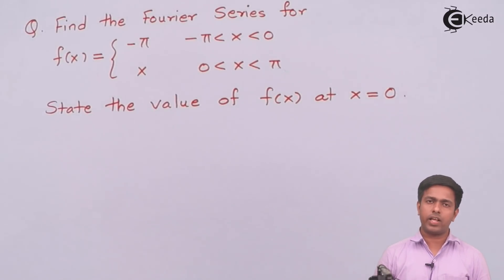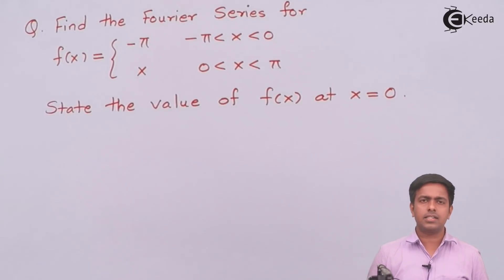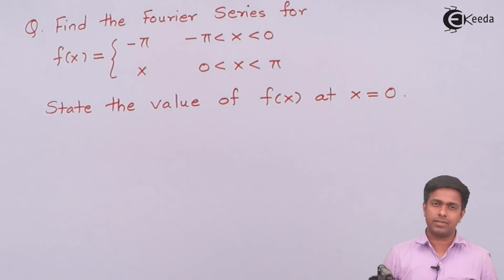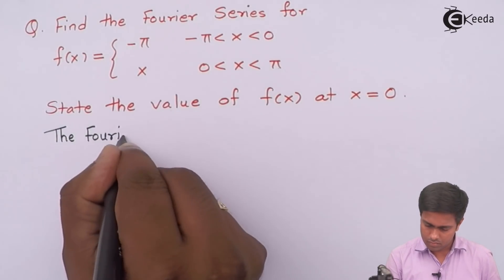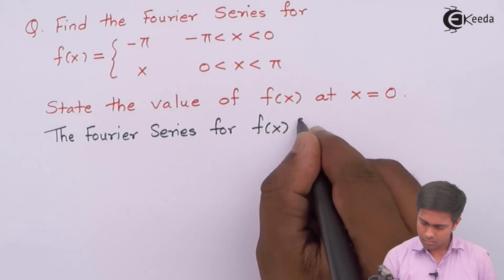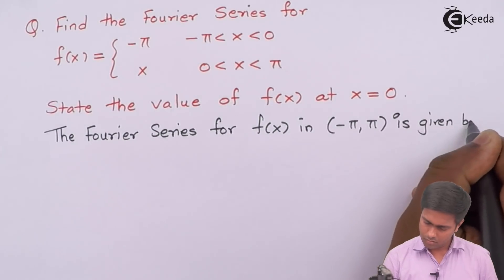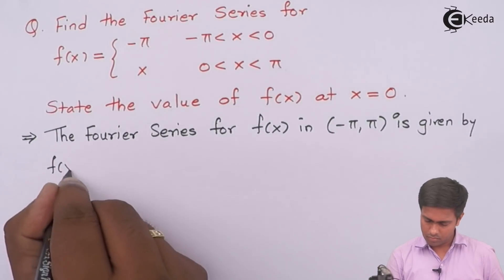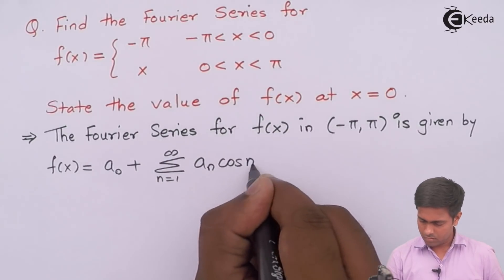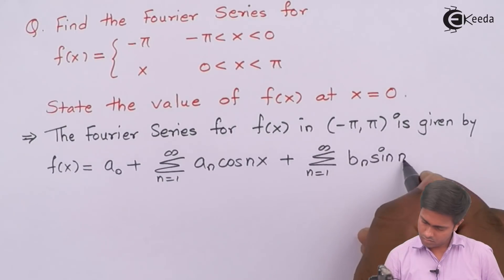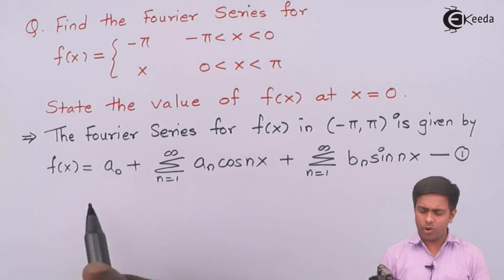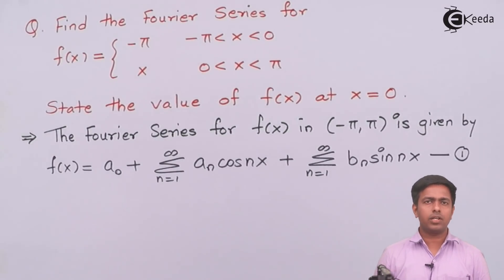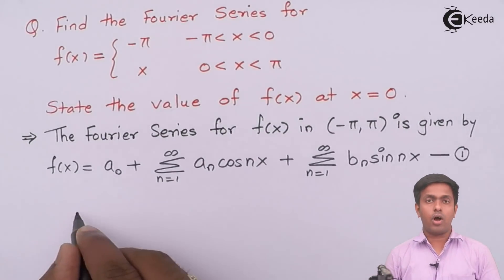This is the Fourier expansion of f(x) in minus pi to pi. We've seen the formula for this in the previous video on what is Fourier series. I'll write down that formula directly. We'll call this series equation number one, then find the values of a₀, aₙ, and bₙ, and substitute them into equation number one to get the Fourier series for the given function f(x).